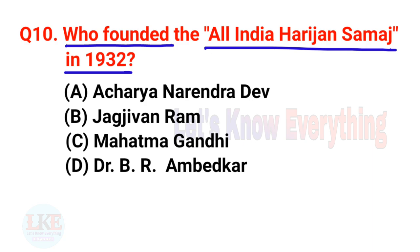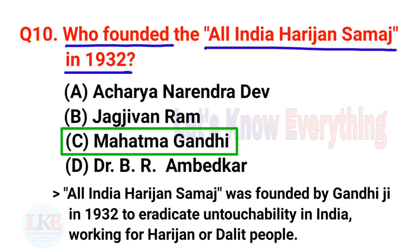Question number 10: Who founded the All India Harijan Samaj in 1932? A. Acharya Narendra Dev, B. Jagjivan Ram, C. Mahatma Gandhi, D. Dr. B. R. Ambedkar. The right answer is option C, Mahatma Gandhi. The All India Harijan Samaj was founded by Gandhiji in 1932 to eradicate untouchability in India, specially working for Harijan or Dalit people.